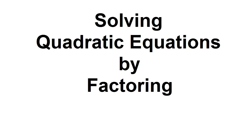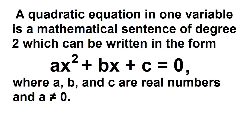Solving Quadratic Equations by Factoring. A quadratic equation in one variable is a mathematical sentence of degree 2, which can be written in the form ax² + bx + c = 0, where a, b, and c are real numbers, and a is not equal to 0.